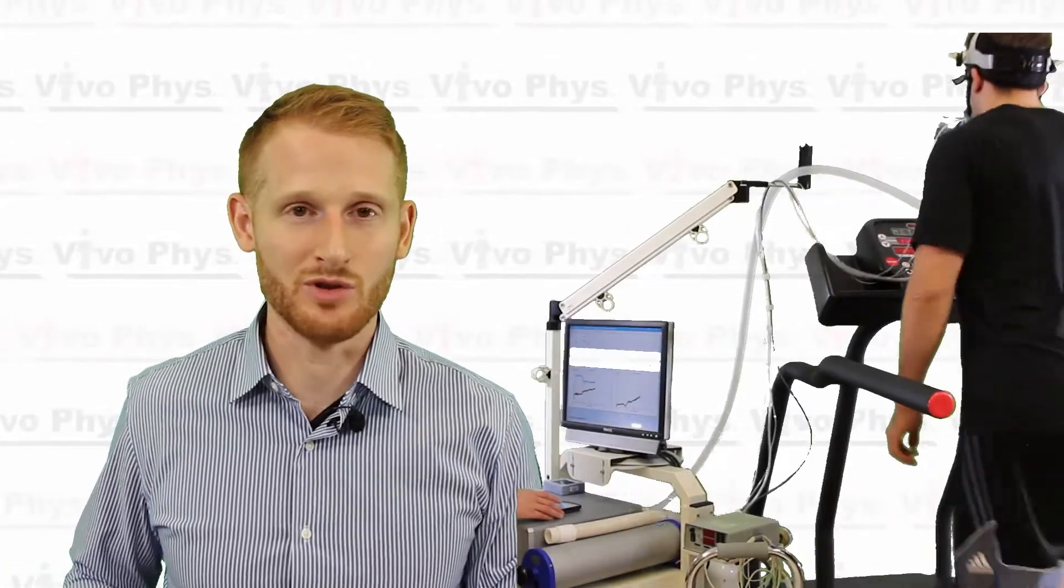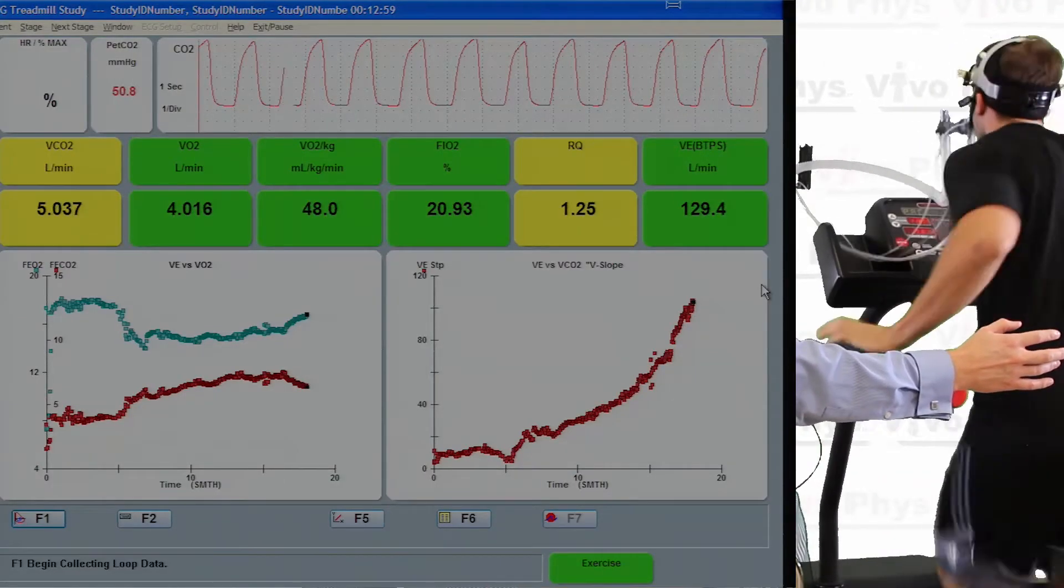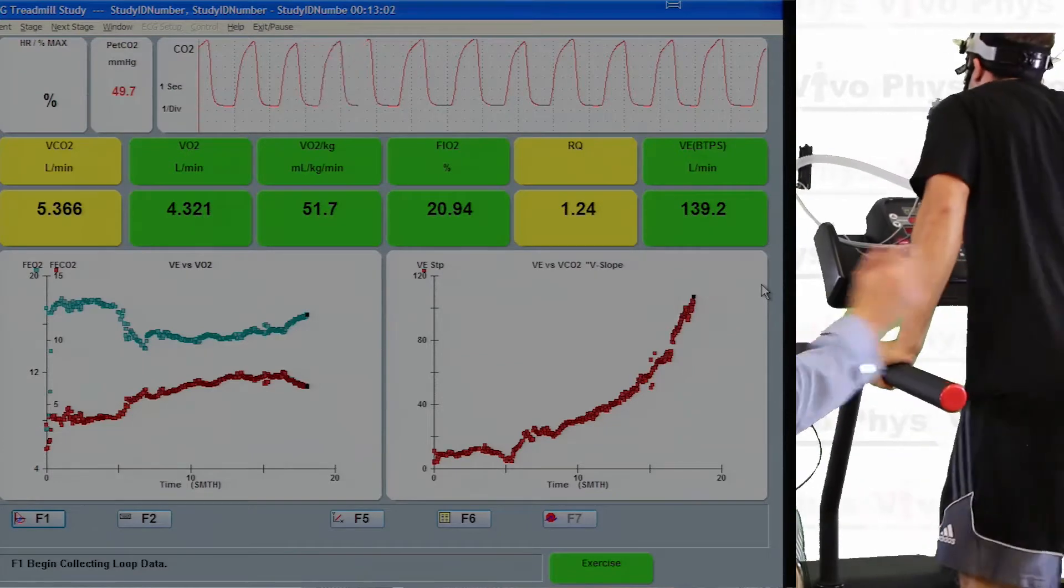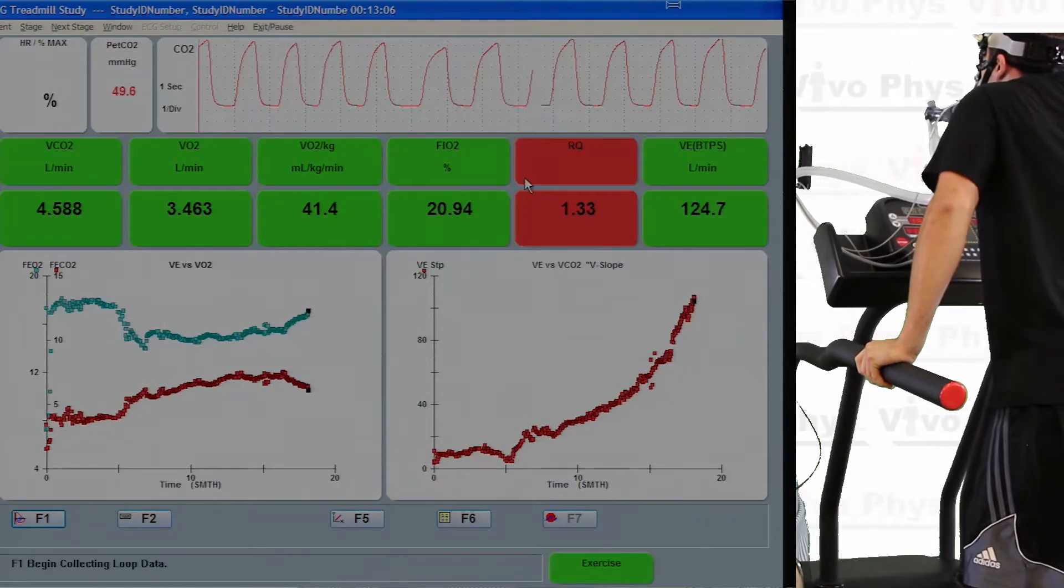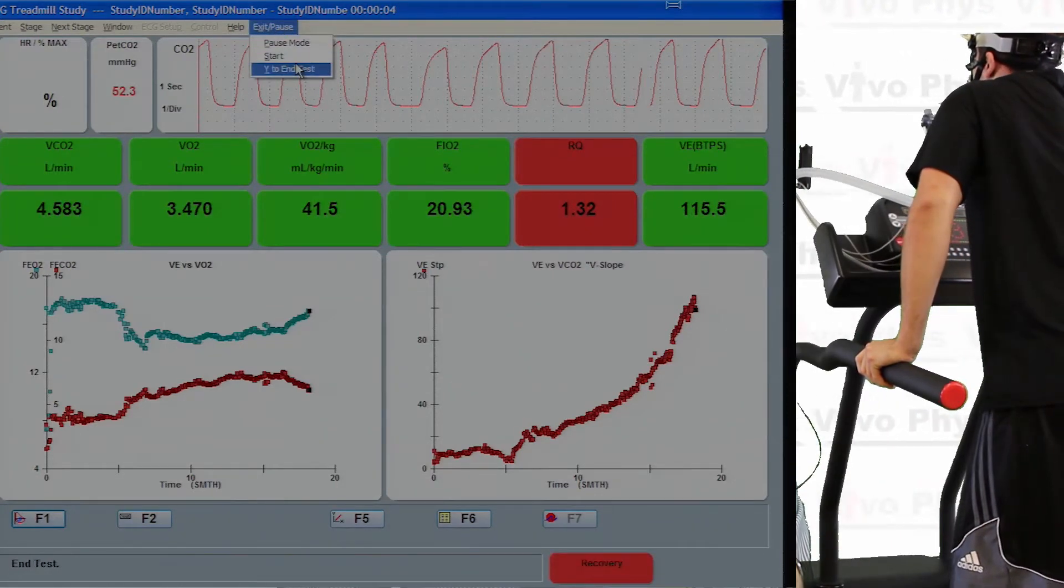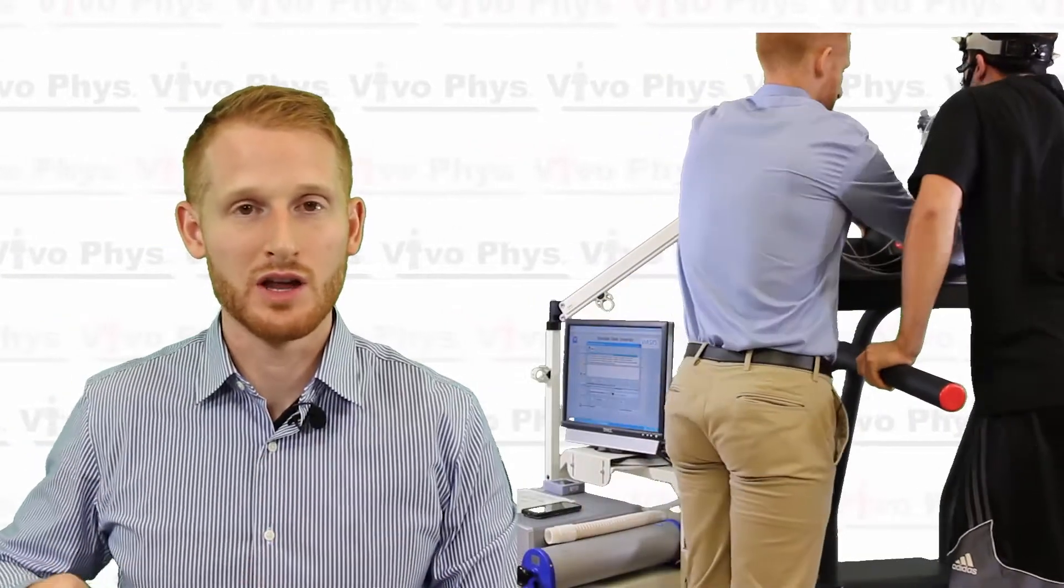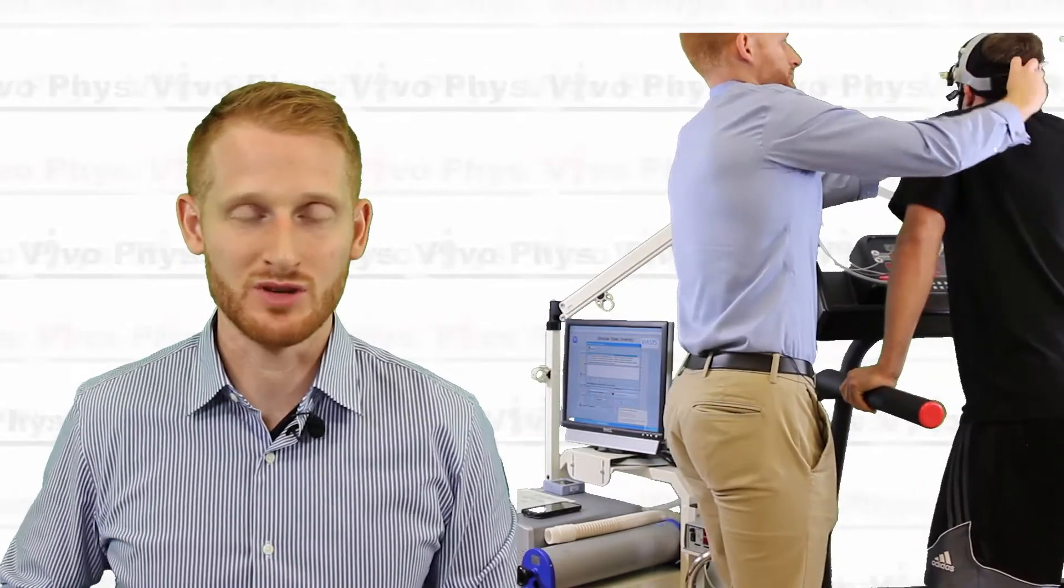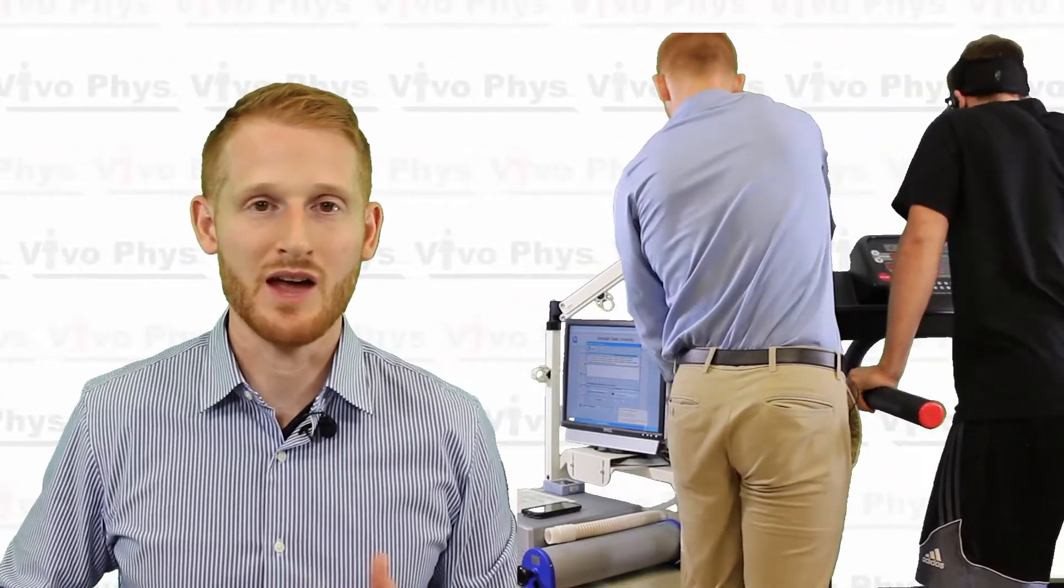When the person stops, as long as you're not planning on recording any recovery data, you're going to go to the menus across the top of the screen and go to the one that says exit and pause. Once you click on that, it's going to bring up a drop-down menu. Click on the one that says end test. Get the headgear off them, lower the treadmill to a lower speed and lower grade, and have the person do some recovery walking just so they can keep their blood flowing and not have any blood pooling in their legs. It'll help them feel better faster.